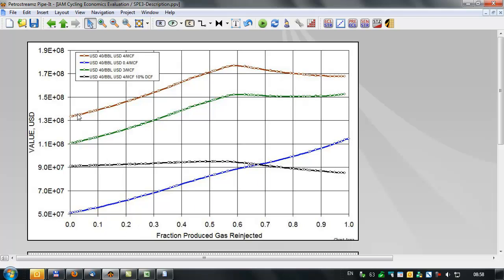And if we do discounting of the brown curve with the forty dollar oil and four dollar gas, we basically see that the effect of how much gas is re-injected becomes much less prominent.